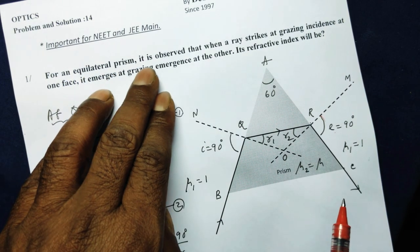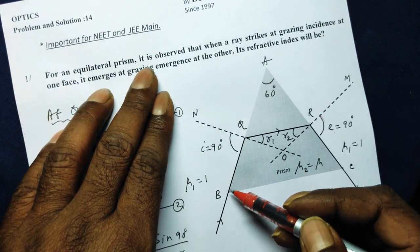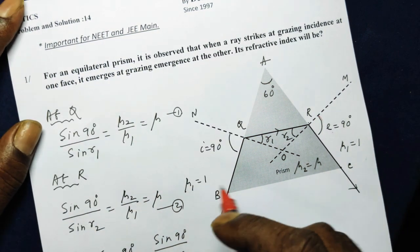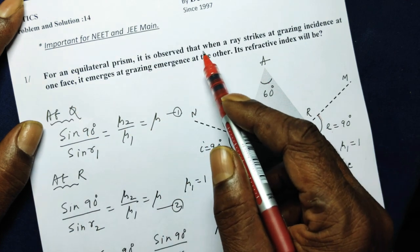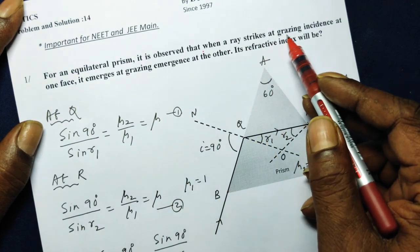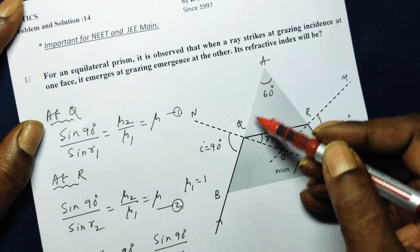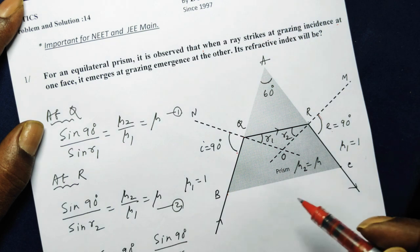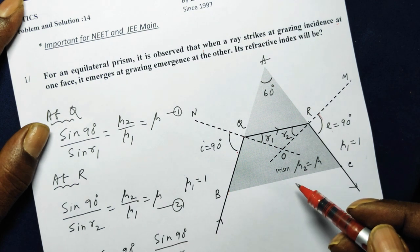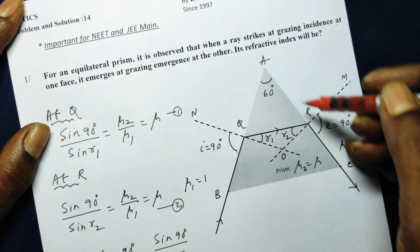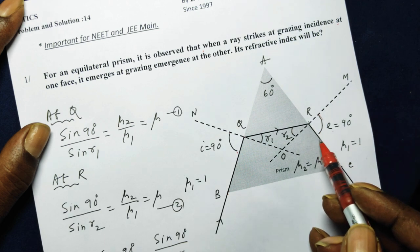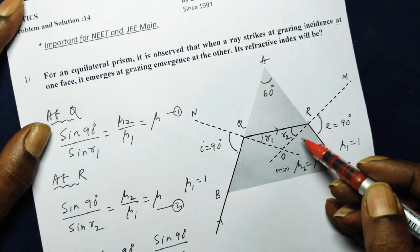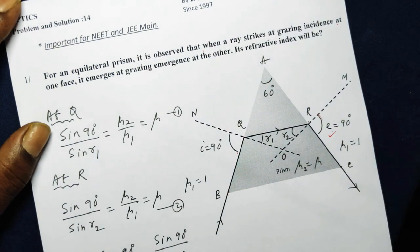Now for an equilateral prism, angle 60, angle B here is also 60, angle C is also 60. For an equilateral prism it is observed that when a ray strikes at grazing incidence on one face AB, with an angle of incidence 90 degrees, it emerges at a grazing emergence at the other face. On the face AC it is also leaving the surface, making angle 90 with the normal, therefore this angle is also called the grazing emergence.